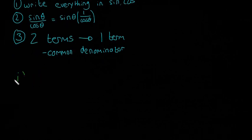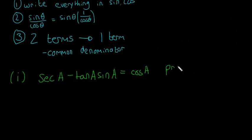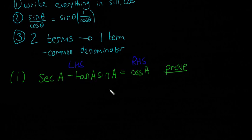The first example: we have sec(a) minus tan(a) times sin(a) is equal to cos(a). They'll give you a question like that and ask you to prove it. What you're supposed to do is leave the right-hand side completely alone and only manipulate the left-hand side. You just keep working with the left-hand side until eventually you get cos(a), and then left-hand side equals right-hand side and you're done.